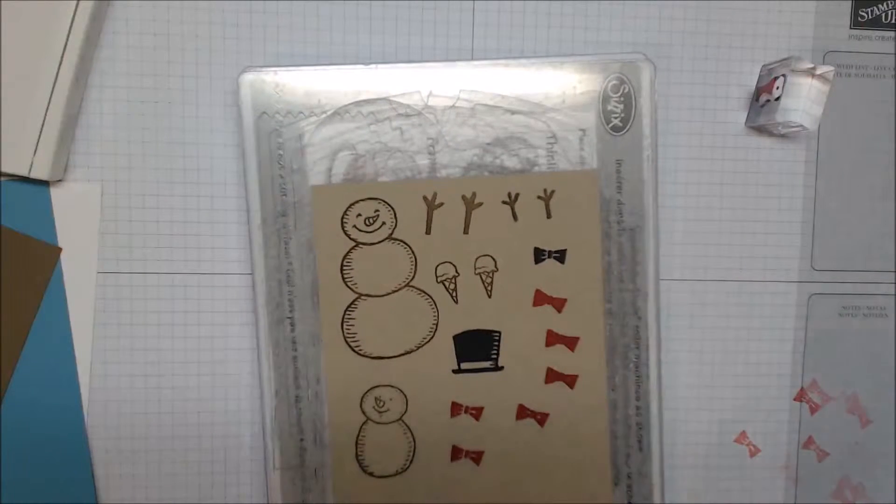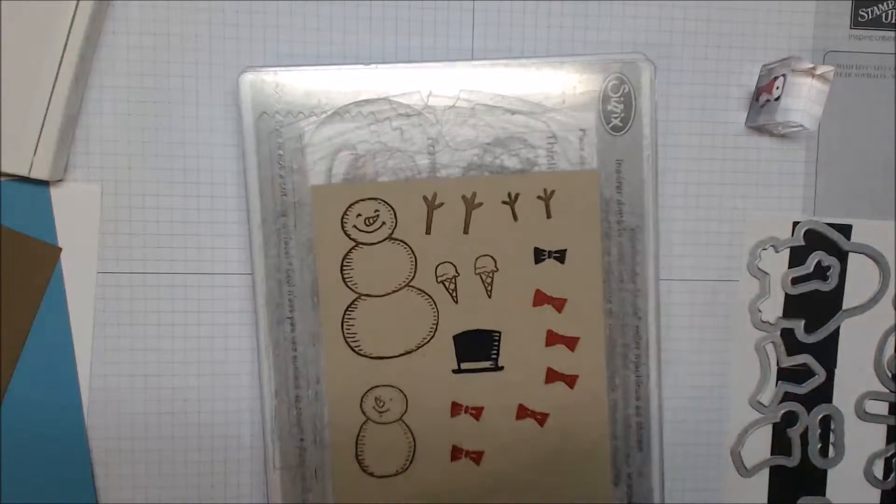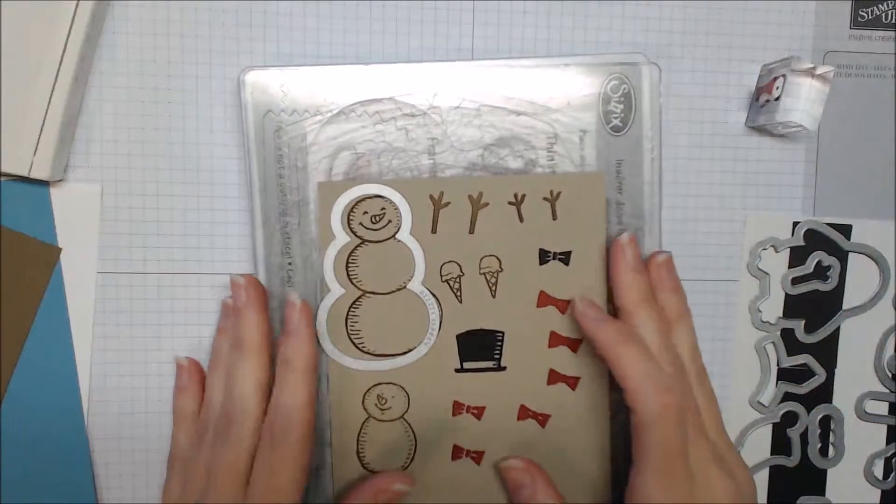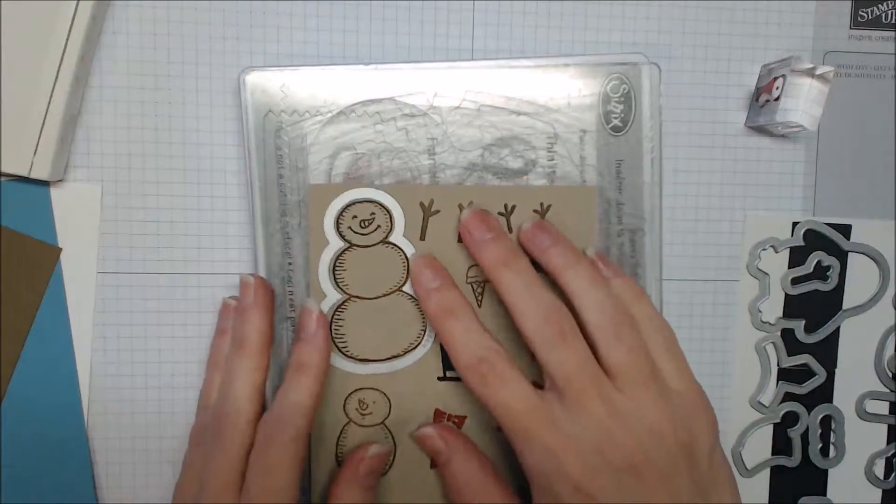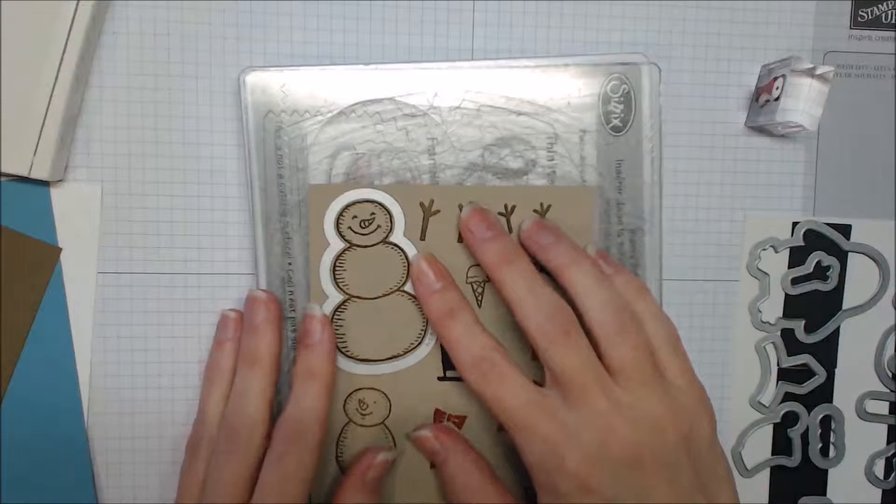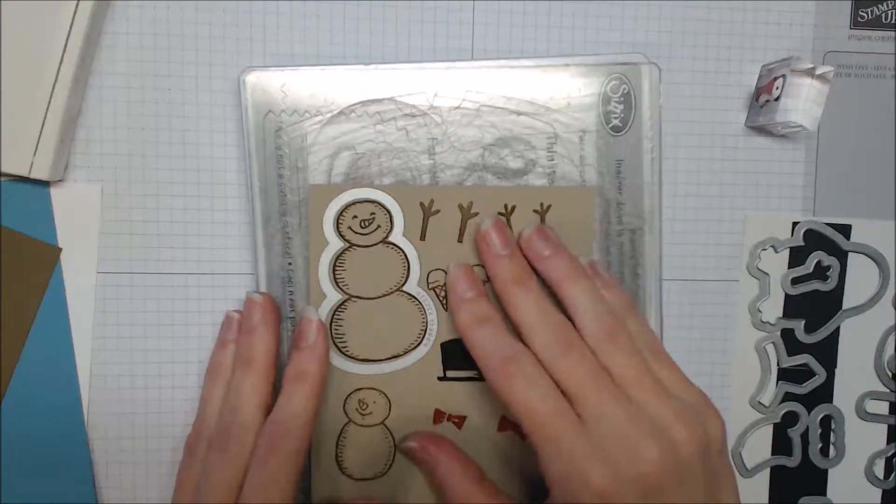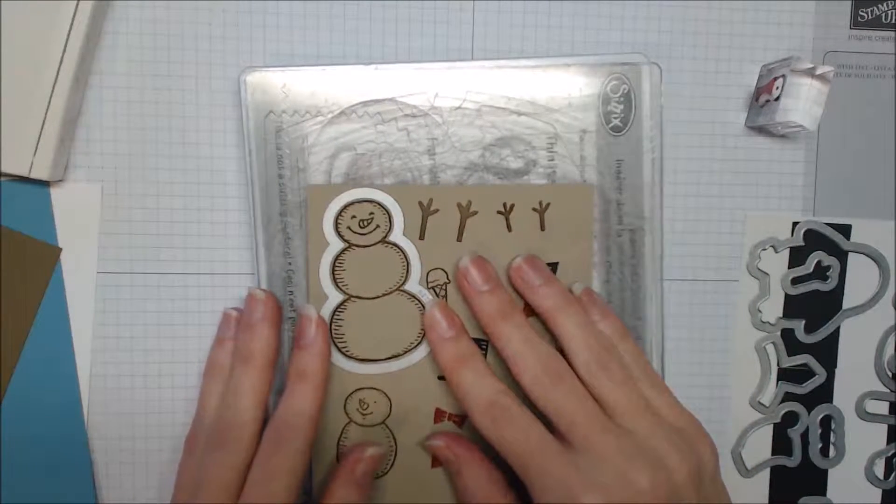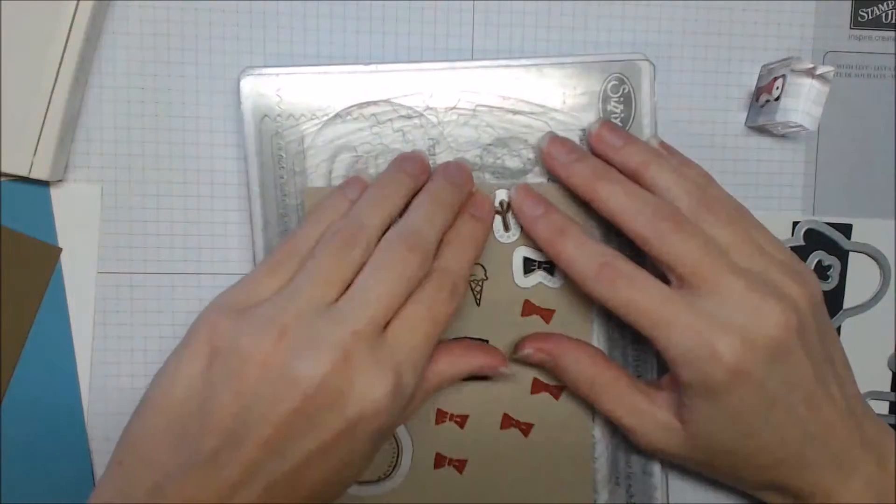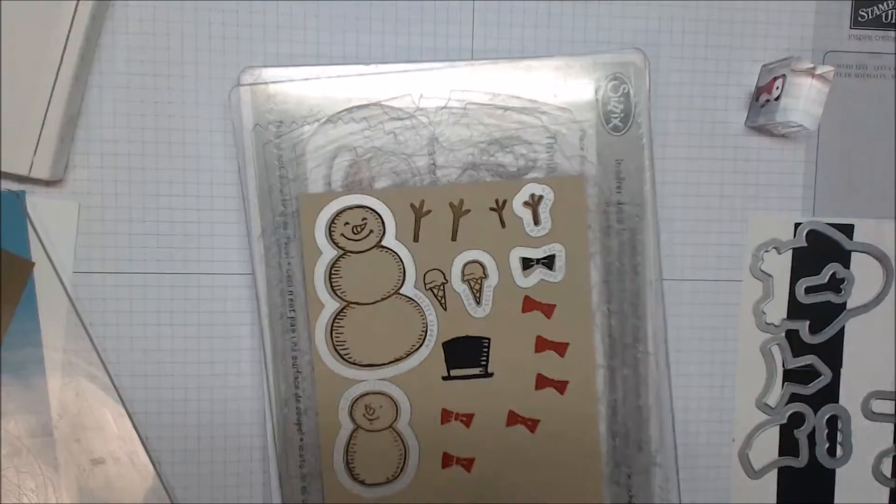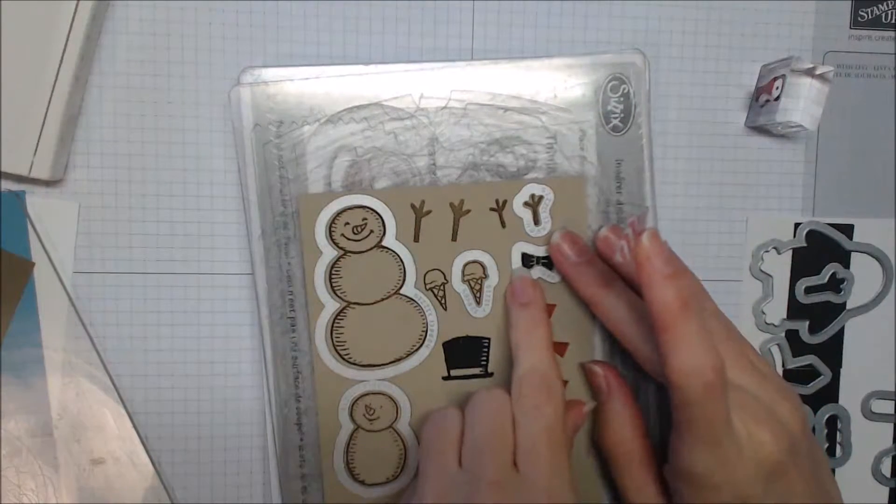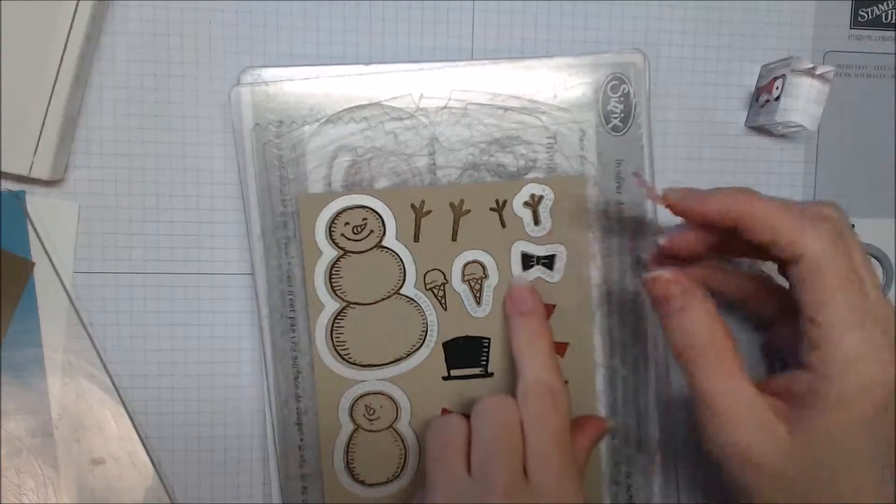Once all of our images are stamped, we can go ahead and die cut our images using the magnetic platform. You can use the multi-purpose platform with some washi tape. You'll notice that the die pieces kind of jump to certain areas. The magnetic platform has multiple magnets in it, so the dies will jump to where they get most attraction.